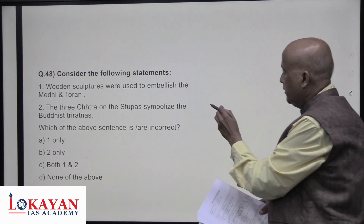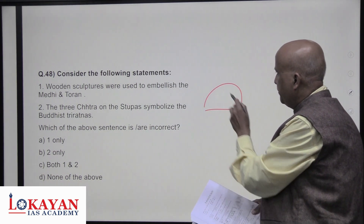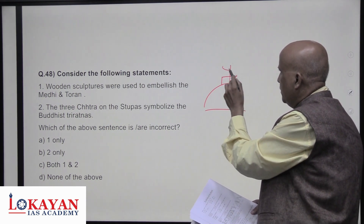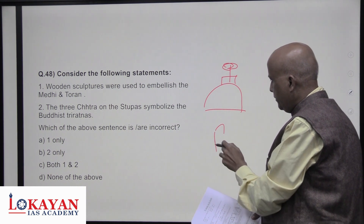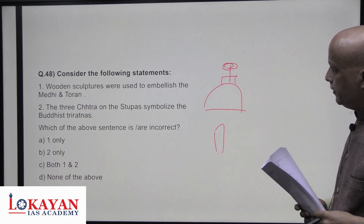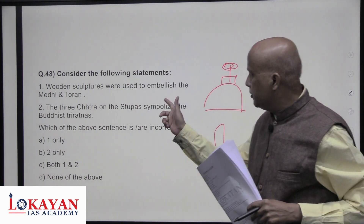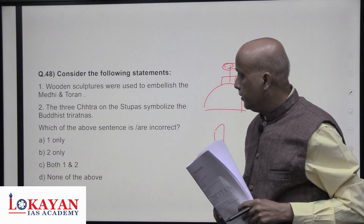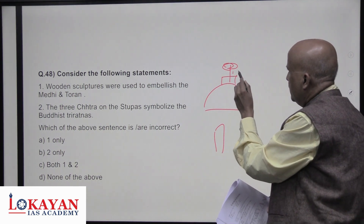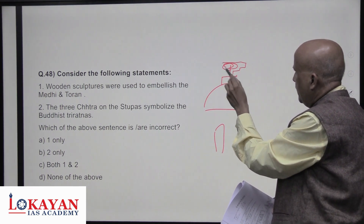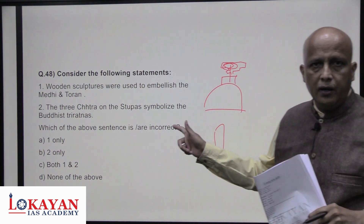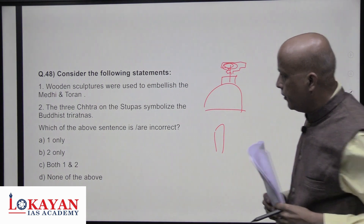Consider the following statements about stupas. Wooden sculptures have been used to embellish the medhi and toranas — correct; in a stupa there is the anda, the yashti, and the chatra, and in front there is a stambha also called medhi. The three chatras on a stupa symbolize the Buddhist Three Ratnas — Sheela, Samadhi, and Prajna — shown as three levels. Both statements one and two are correct.